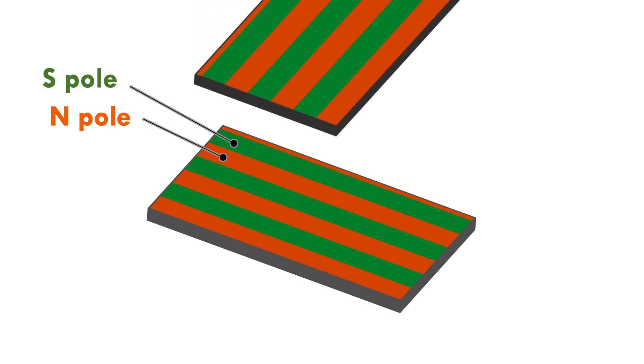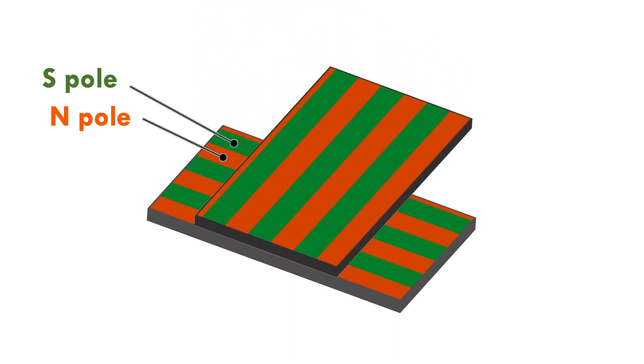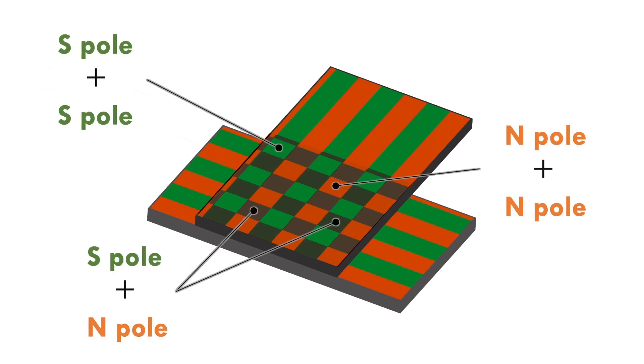First, when magnetic rubber sheets are stacked, the magnetic fields of the lower sheet appears on the top surface of the upper sheet. Next, we divided the superposed magnetic sheets into three areas.